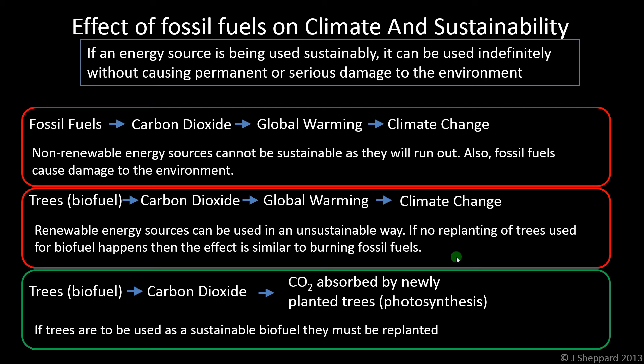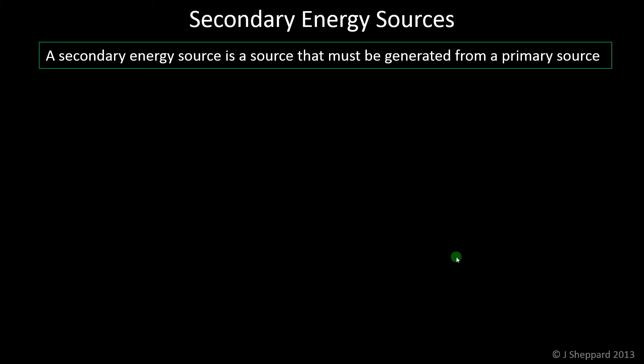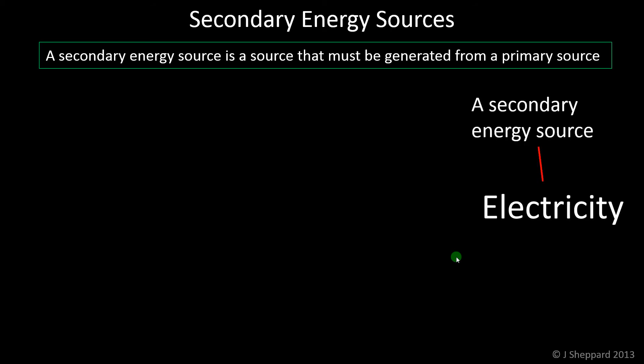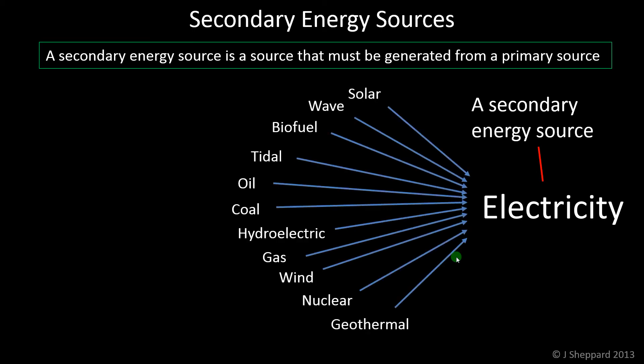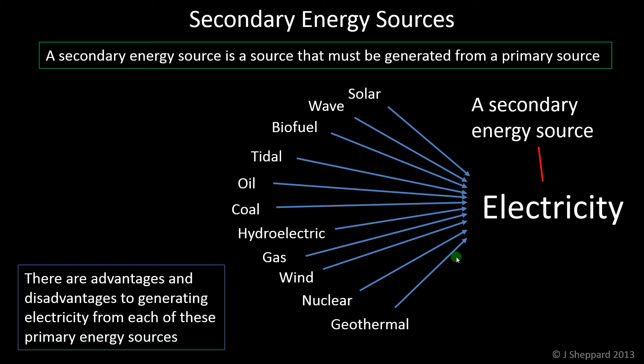So that's some ideas about sustainability, renewable resources, and how the things are related to each other. That covers primary resources. So why are we burning fossil fuels, biofuels, or using wave or hydroelectric? Well, we're after a secondary energy source. The main secondary energy source we're after is electricity. A secondary source is one that has to be generated from a primary source. There are all our primary sources, and we can generate electricity from all of these in various different ways.